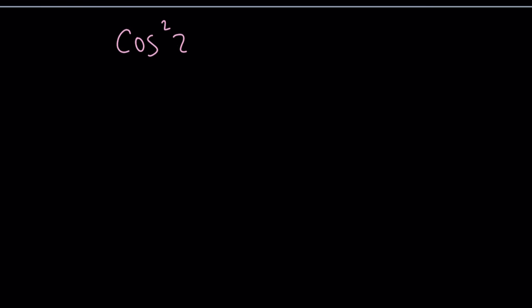Pretend you don't know what it is — let's go ahead and prove this or find out what this expression is equivalent to. So we have cosine squared z plus sine squared z. We can approach this in different ways. One approach I'm going to talk about will be using a very important formula, which is Euler's formula, or you can call it the polar form.